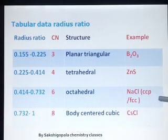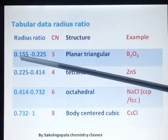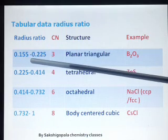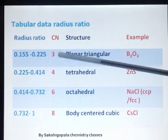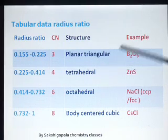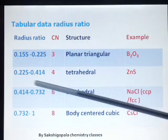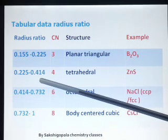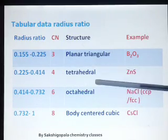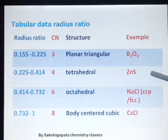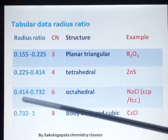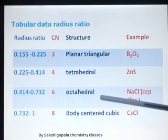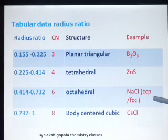The first case: when the radius ratio of cation to anion is in the range 0.155 to 0.225, the coordination number is 3 and the structure is planar triangular — example is B2O3. The second case: if the radius ratio is in the range 0.225 to 0.414, the coordination number is 4 and the structure is tetrahedral — example is zinc sulfide (ZnS). The third category: 0.414 to 0.732, coordination number is 6, geometry is octahedral — example is NaCl.